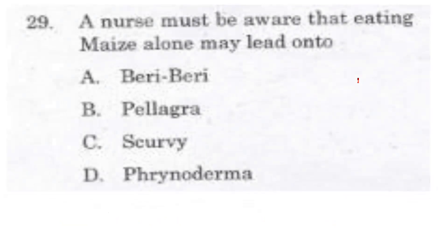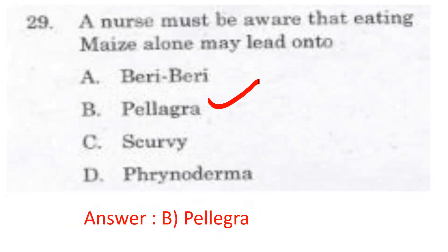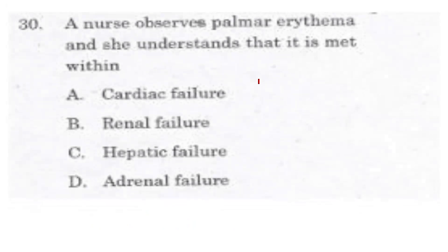Question 29: The nurse must be aware that eating maize alone causes pellagra. Options include pellagra in the B option and niacin/nicotinamide in the B3 option. The answer is pellagra, caused by niacin (vitamin B3/nicotinamide) deficiency.